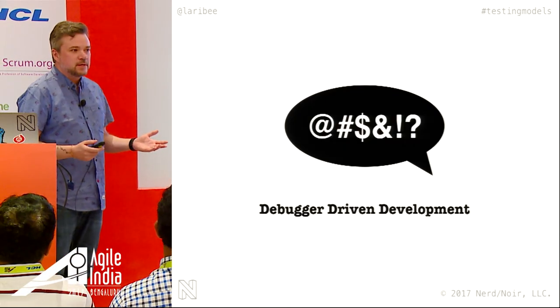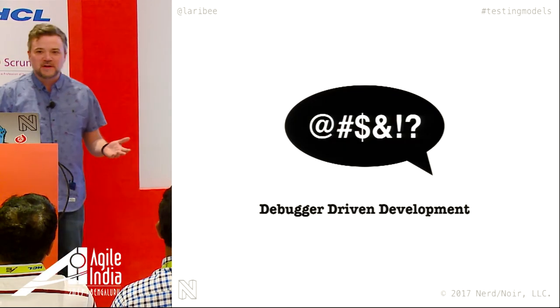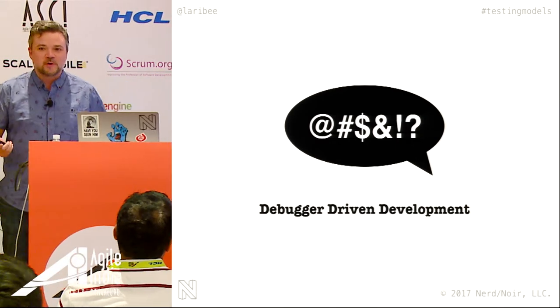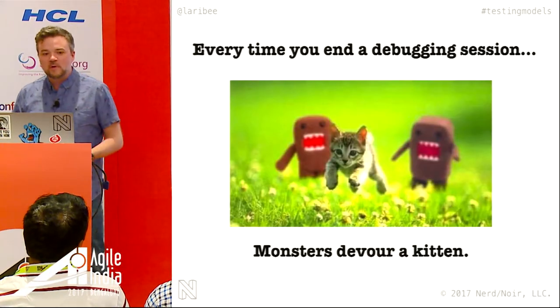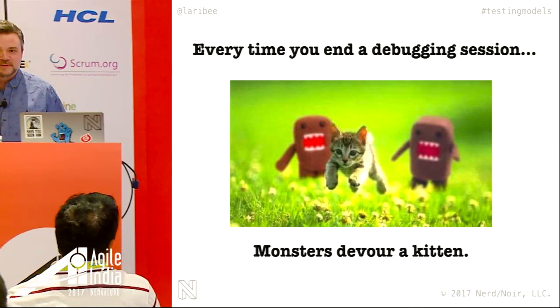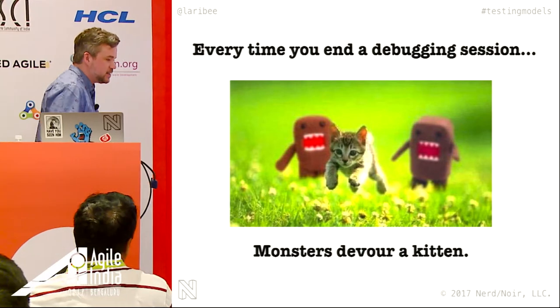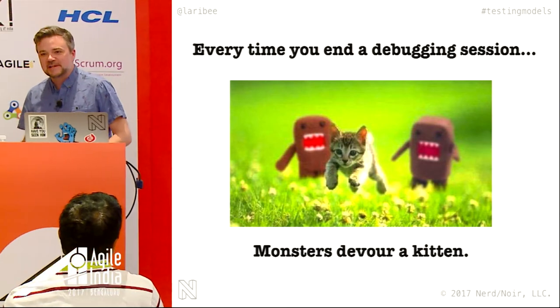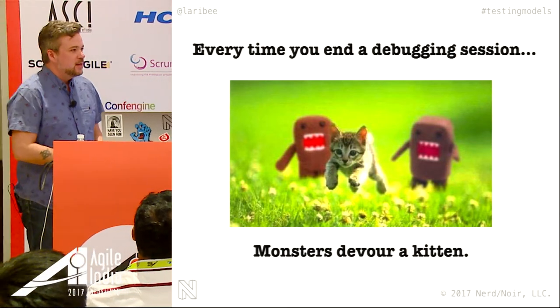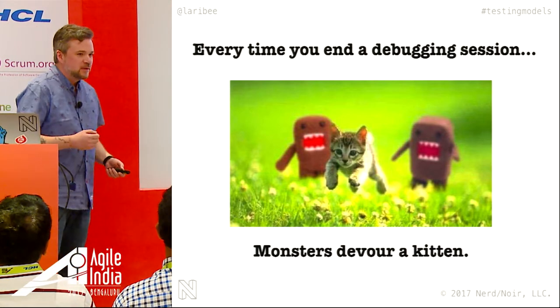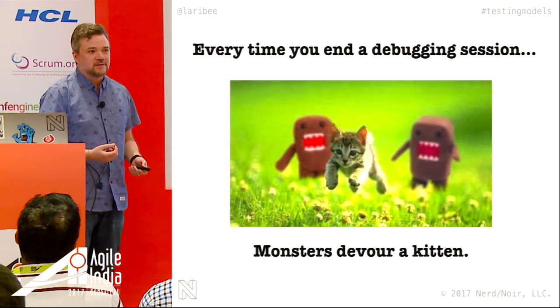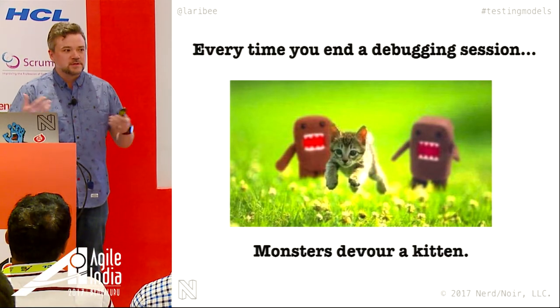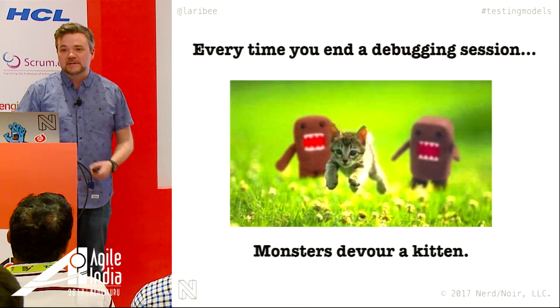The first model I like to call debugger-driven development, DDD — obviously an overloaded term. Debugger-driven development is typified by the so-called cowboy coding paradigm: an over-reliance on debuggers. This is where you're not really doing any testing at all — an absence of testing as a kind of model. Of course it's possible to over-test, but this is wild under-testing. We're just relying on tools to figure out why something happens after it happens.